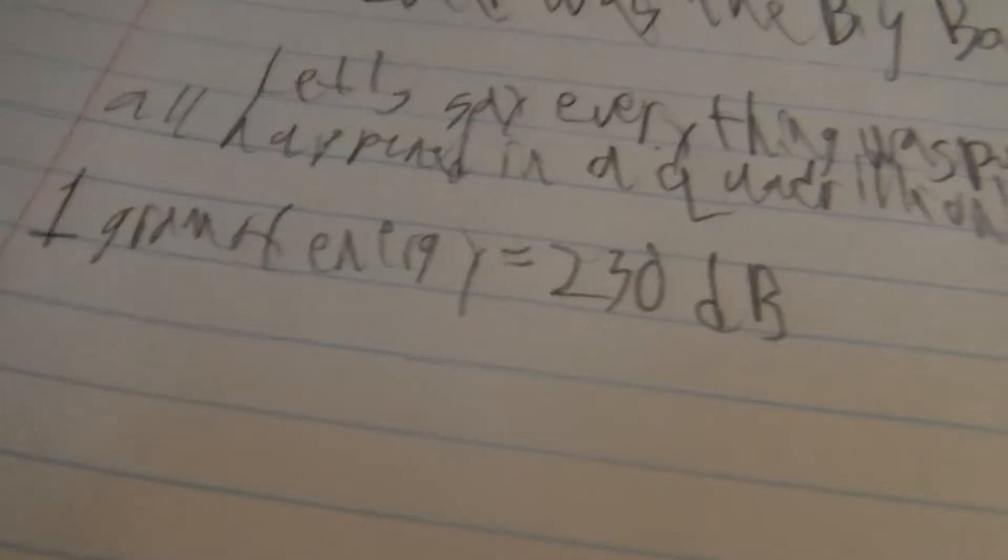Now, we are going to have to define all of the masses. So, one gram of energy equals 230 decibels, which by the way is huge because of how much energy is in one gram.